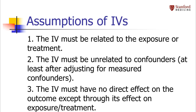Instrumental variables are also called instruments and they must meet three assumptions. First, the instrument has to be related to the exposure or treatment of interest. Second, it has to be effectively randomly assigned, meaning it can't be related to any confounders. And third, it can't have a direct effect on the outcome. An instrument can still be valid even if it is related to some measured confounders, as long as the researchers adjust for these confounders in their analysis and there is no residual confounding after adjustment. For example, if an instrument is associated with race but you believe it is randomly determined within racial groups, you can still use that instrument as long as you adjust for race.